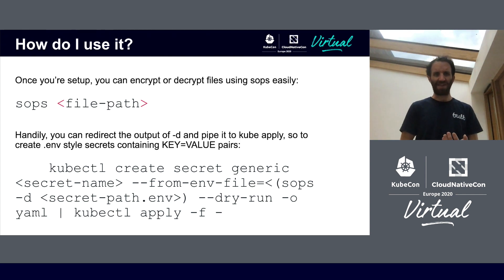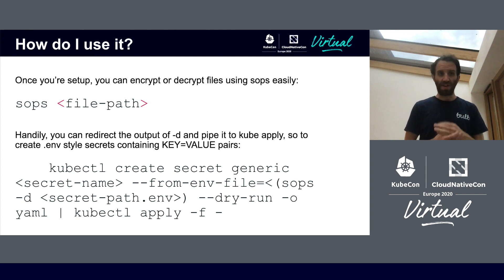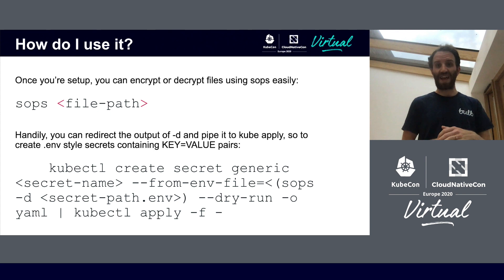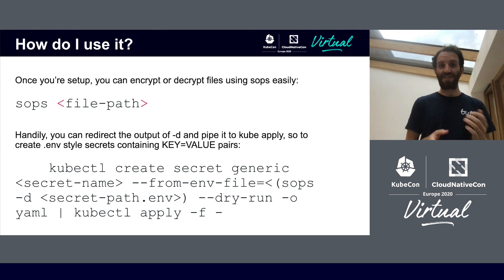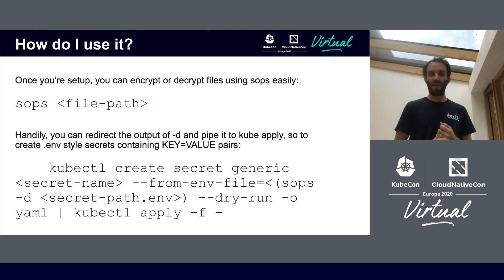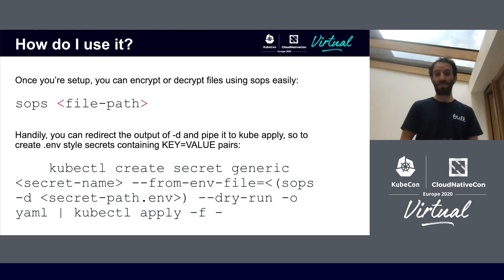Okay, how do you use it? Once you set up — and as a side note, you can install SOPS using a package manager like Homebrew — then you can encrypt and decrypt files using the SOPS command, as shown on the slide. You can set SOPS to decrypt mode using the -d flag and then pipe it over standard in to kubectl apply. So to create .env style secrets containing key-value pairs, we do something like the command on screen. This can be run anywhere the SOPS and the kubectl CLI are installed, as long as we're authenticated to our cloud KMS to get access to the master key to decrypt the file. This means you can run this command as a build step in your CI.